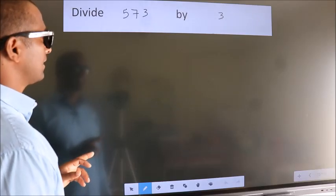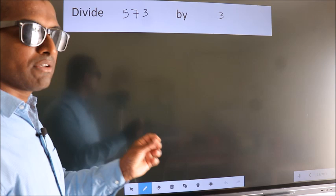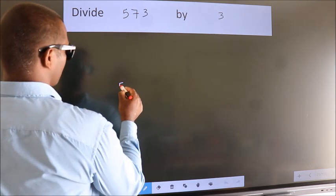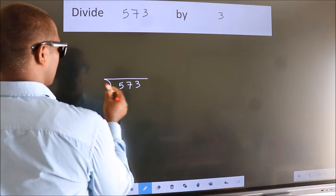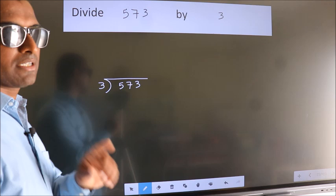Divide 573 by 3. To do this division, we should frame it in this way: 573 here, 3 here. This is your step 1.